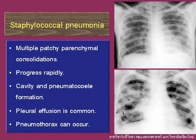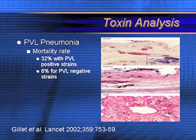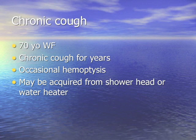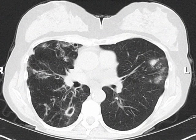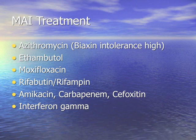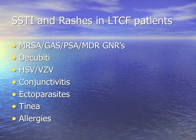The virulence factor for necrotizing Staph aureus pneumonia following influenza is PVL — Panton-Valentine Leukocidin — with mortality five times greater if PVL-positive. A 70-year-old with chronic cough and hemoptysis may have acquired Mycobacterium avium intracellulare from the showerhead or water heater — this is Lady Windermere syndrome, presenting with nodules and bronchiectasis, requiring combination antibiotic therapy.